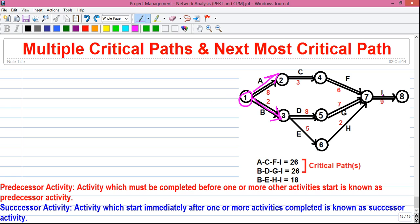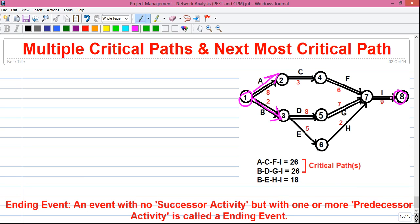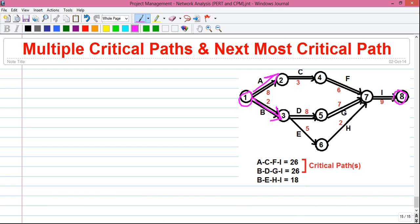Next is the ending event. Our ending event is event 8. So the event with all incoming activities but no outgoing activities is called the ending event. In this case at event 8, only the activity I is ending and there are no activities exiting or emerging from event 8. So that's why it's our ending event.